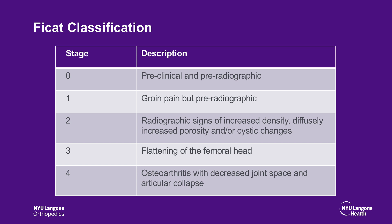Stage 0 is preclinical and pre-radiographic, and is suspected if the other hip has definite disease. Stage 1 is pre-radiographic but the patient presents with groin pain. Stage 2 presents with radiographic findings of increased density, diffusely increased porosity, and cystic changes, and can present with subchondral fracture, also known as the crescent sign. Stage 3 is characterized by flattening of the femoral head, and Stage 4 demonstrates osteoarthritis with joint space narrowing.